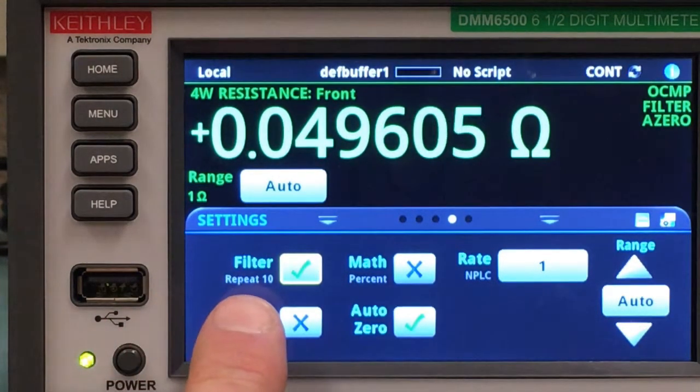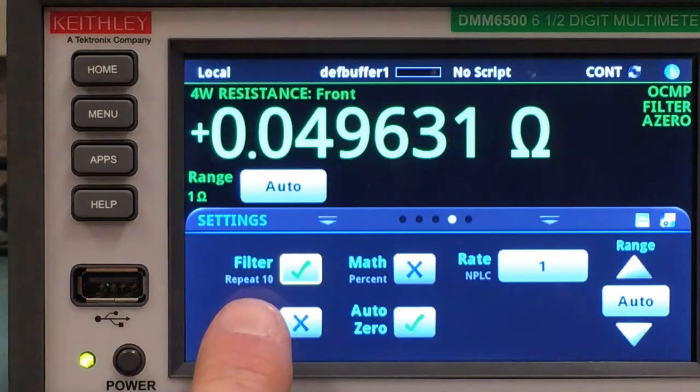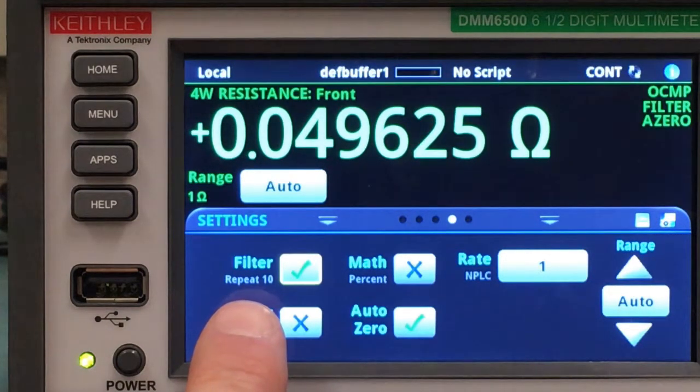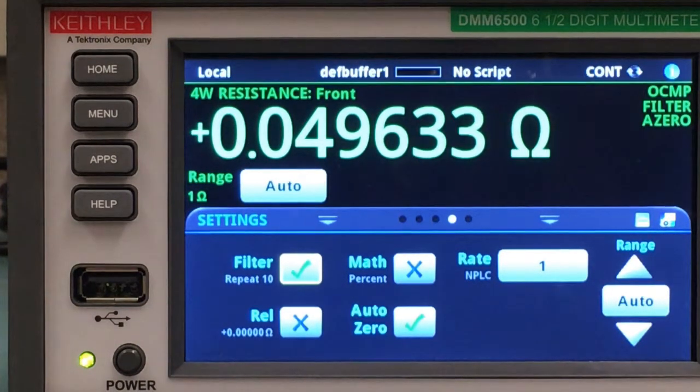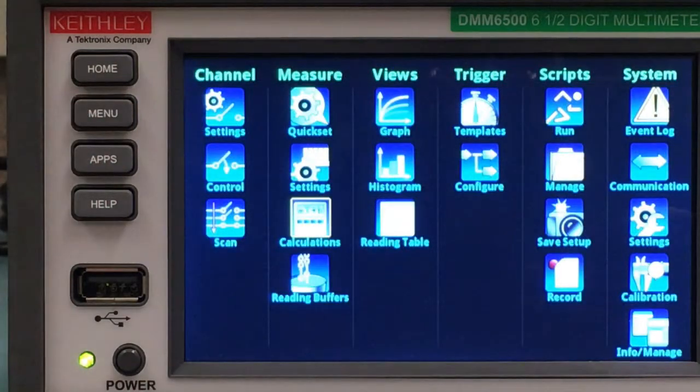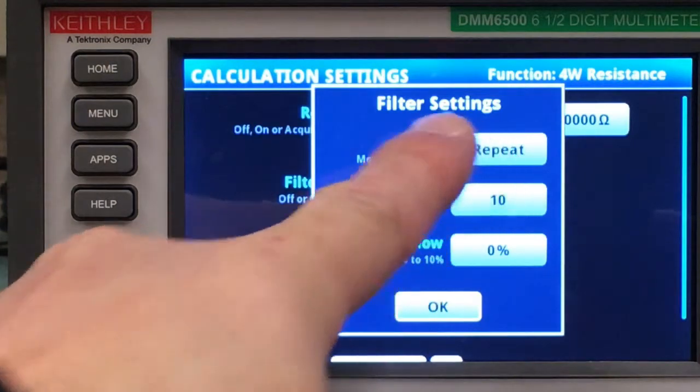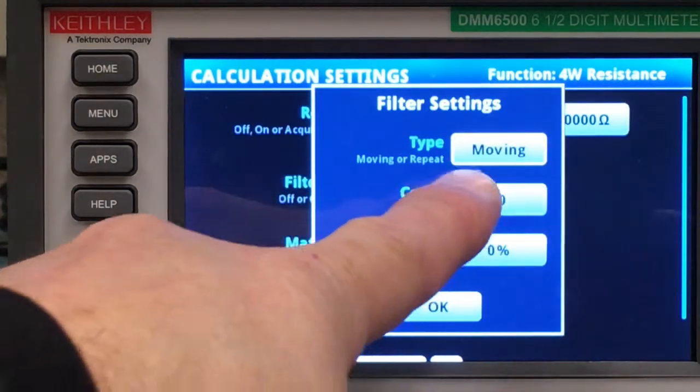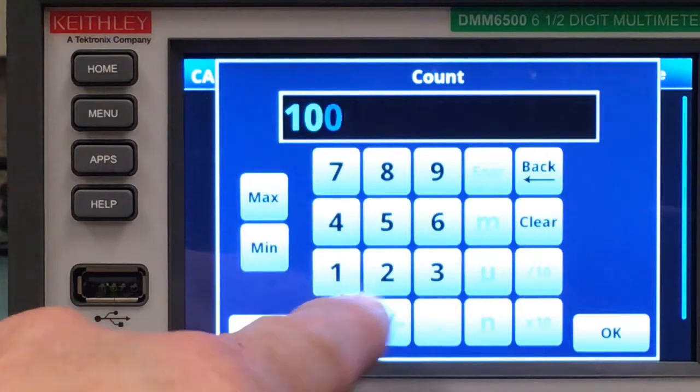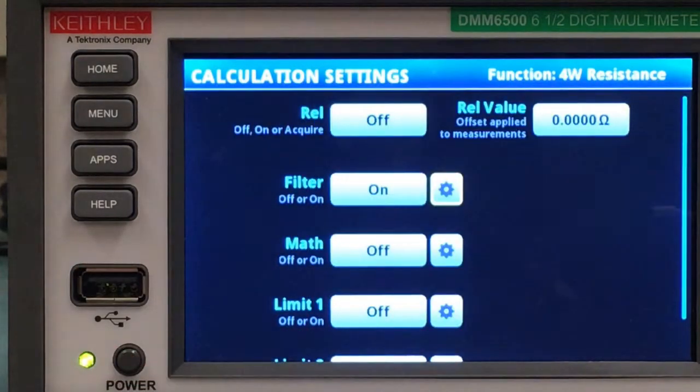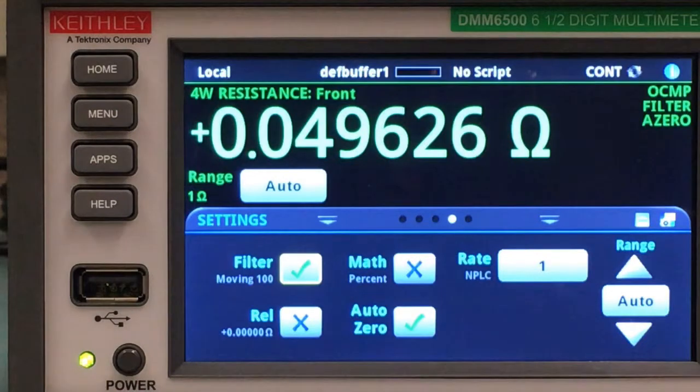You might be able to see in the text down here that we have a 10-sample filter applied. It's a repeating filter, so it will capture 10 readings and then give you an update. I want to smooth that out a little bit more, so I go to menu, calculations, let's adjust my filter, and I want to make it a moving filter with a count of 100.